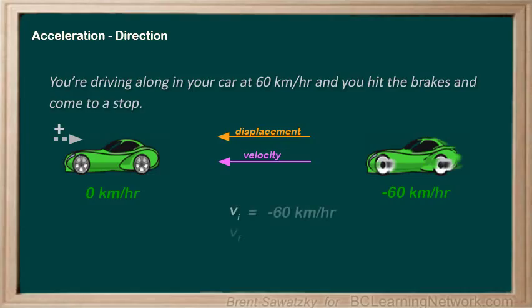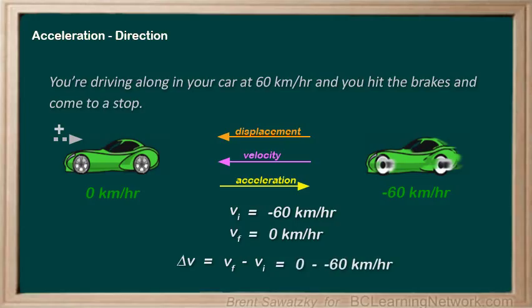But, when the brakes are applied, we're slowing down again. This means that the acceleration would be in this direction, and that's the positive direction. So, in this case, we'd say we have positive acceleration. We're still slowing down, but because of our directions, we'd say it's a positive acceleration. The velocity is becoming less and less negative. Therefore, we could say the velocity is becoming more positive. It's accelerating.